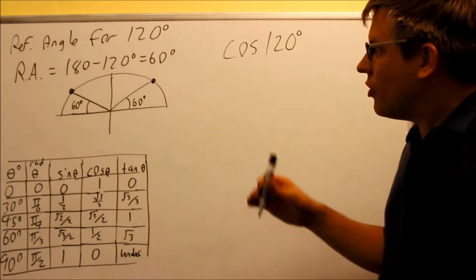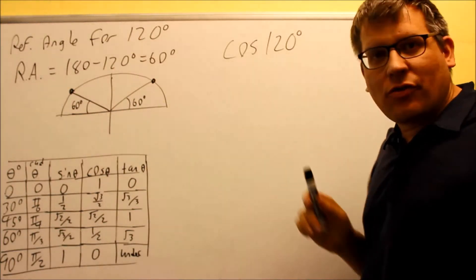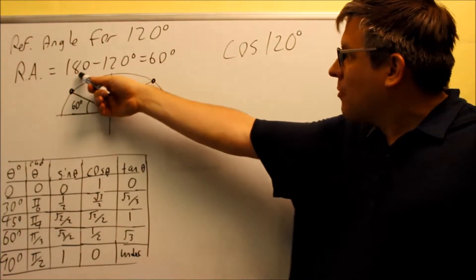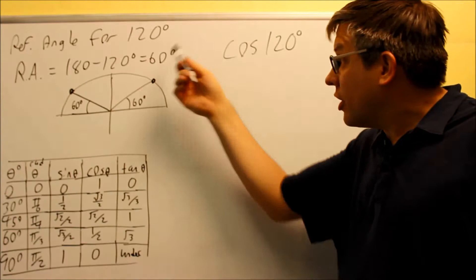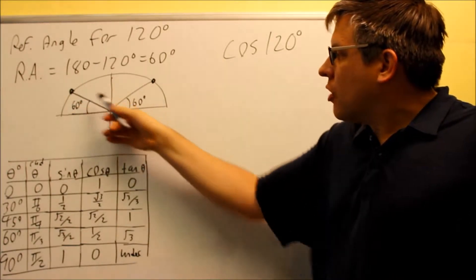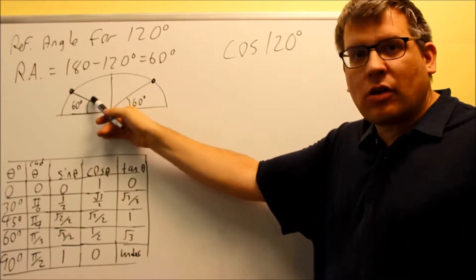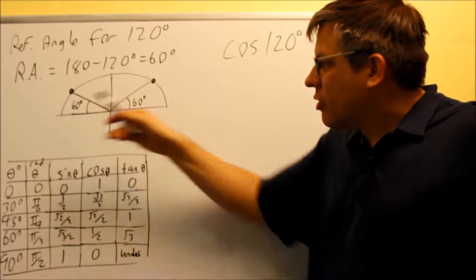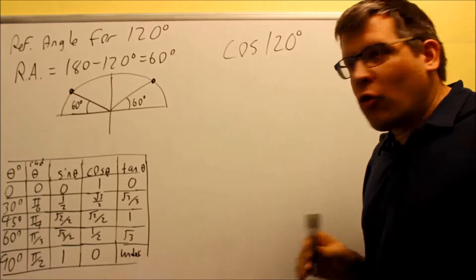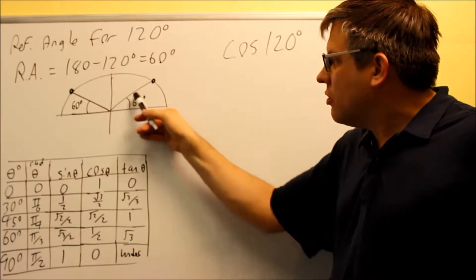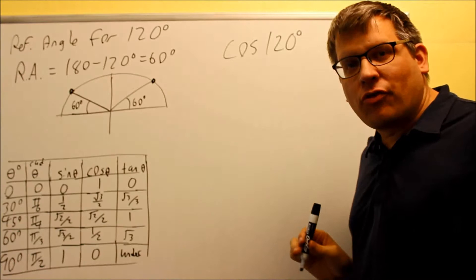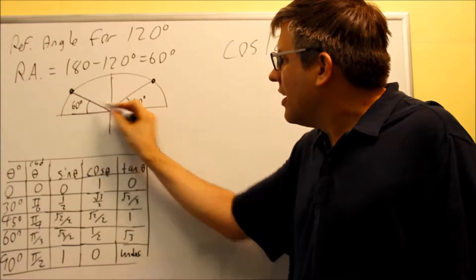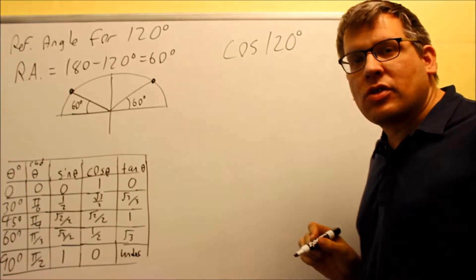In the previous video we talked about finding the reference angle for 120 degrees, and we got that by doing 180 minus 120, we got 60 degrees. That angle would be drawn here. If I went all the way around to that angle, that would be 120 degrees, and the reference angle here is 60. The 60 degrees here corresponds to the 60 degrees in the first quadrant, so it's basically taking the original angle and making it into an angle that was in the first quadrant.